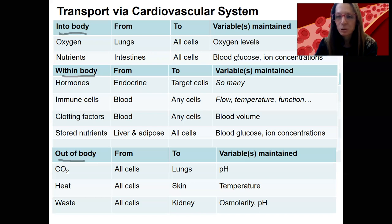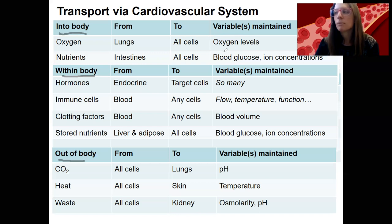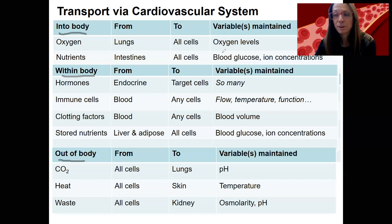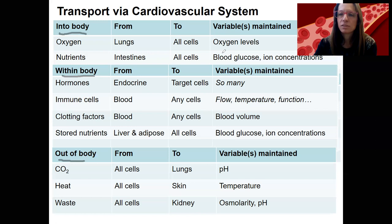When we draw a feedback loop, we might start with a disruption in one of these variables, which will then cause a change in the delivery of that substance as part of the response. We don't always draw blood vessels or blood carrying something as part of a response, but it's often going to be part of one — it's kind of assumed. Like glucose mobilization — that's in the blood.